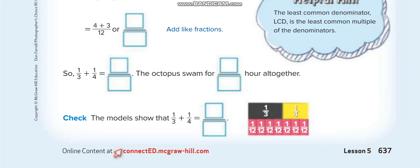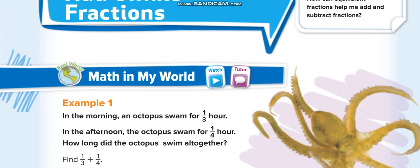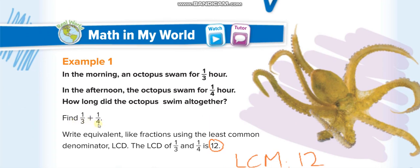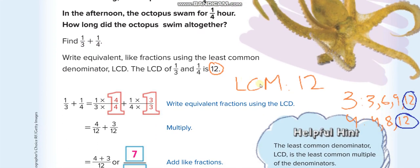In this lesson we are going to add unlike fractions. Unlike fractions are when the denominators are not the same. Like fractions are when the denominators are the same. To find the sum for unlike fractions, first of all we have to make the denominators the same — we can't add them until we do. To make the denominators the same, we have to find the LCM, the least common multiple. Since we're finding it for the denominator, you can also call it the LCD, least common denominator.